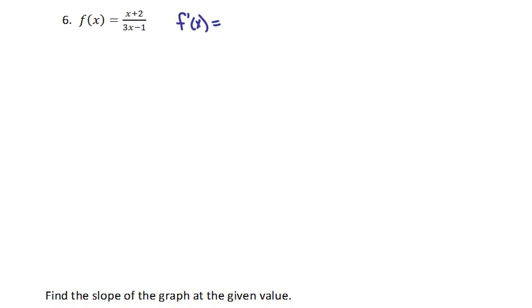So we say f'(x) is low, which is 3x - 1, times d-high—the derivative of the numerator is just 1—minus high, which is x + 2, times d-low, which is 3, all over (3x - 1) squared.